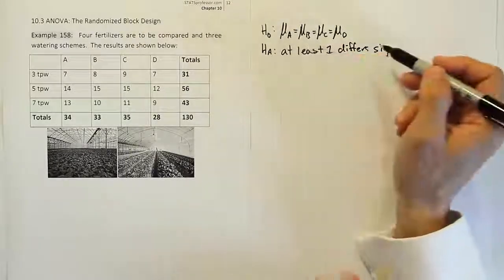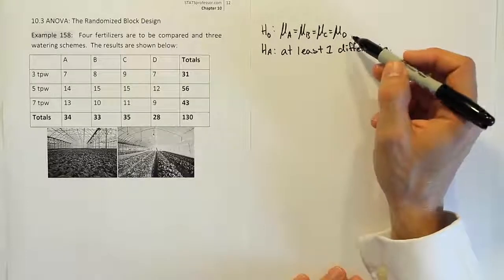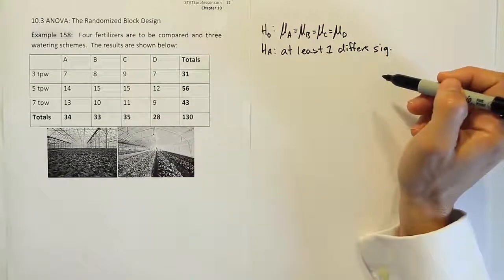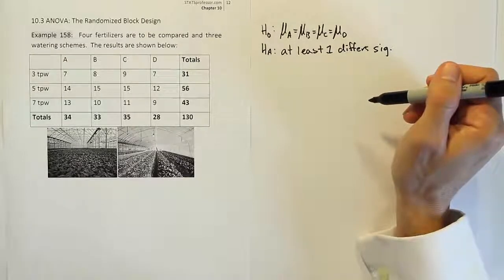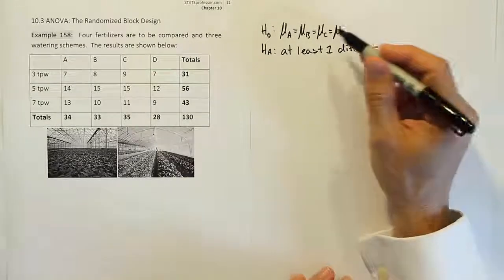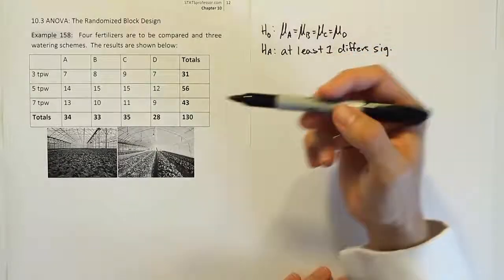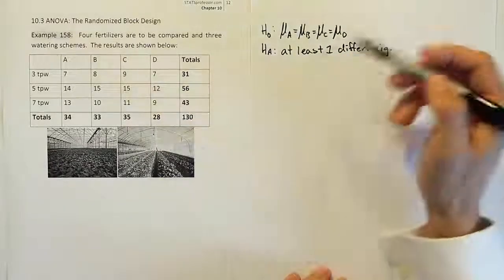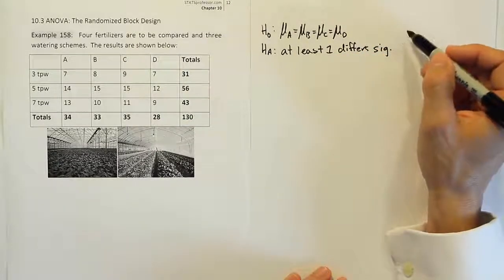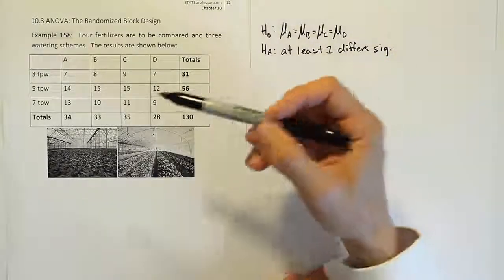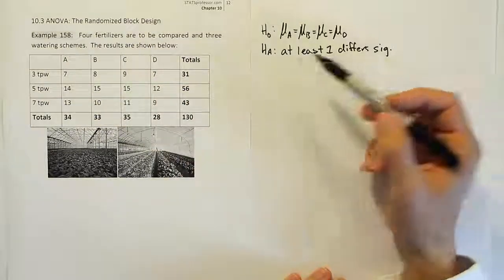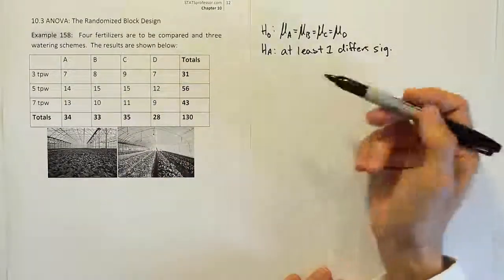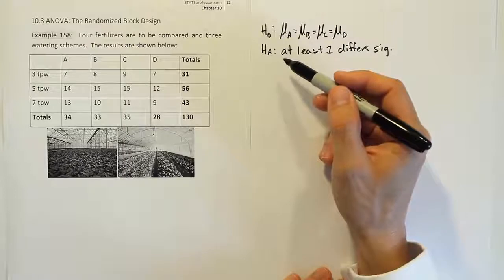So we have H0 and HA and this is for the treatment means now. We can also run a simultaneous hypothesis to compare the watering schemes, which we could do, but we'll kind of just talk about that briefly towards the end. I don't need to write out the whole hypothesis. But what would the hypothesis be for the watering? It'd be the same thing. It'd be basically the mean for three times a week watering is equal to the mean for five times a week watering is equal to the mean for seven times per week watering, and so on versus at least one differs significantly.